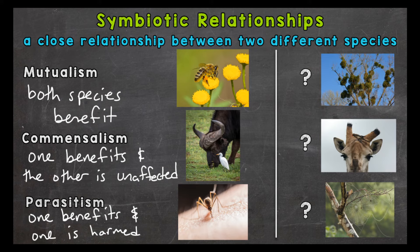To finish off we're going to go through three more examples and determine if they're mutualism, commensalism, or parasitism. First we have a mistletoe and a host tree. Mistletoe uses its roots to attach to trees and absorbs the tree's nutrients. The mistletoe is benefiting and the tree can be harmed or negatively affected. So this is an example of parasitism.